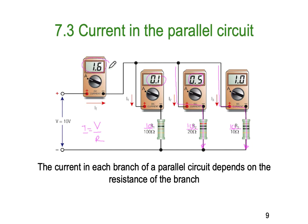Our total current will be 0.1 plus 0.5 plus 1 amp, giving us a total of 1.6 amps in the whole circuit. The total current is the addition of all the branch currents. Each branch current splits at a node: some current splits off and some continues along, so in a parallel circuit the addition of all the branch currents equals the total current.